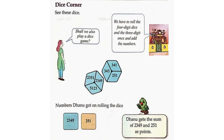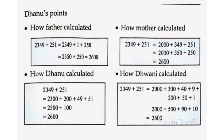Numbers Danu got on rolling the dice: 2,349 plus 2,349 as points. 2,349 plus 2,351 as points. Danu's points calculated: 2,349 plus 1 plus 250 is equal to 2,349 plus 251.